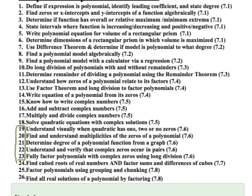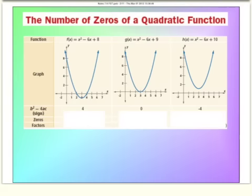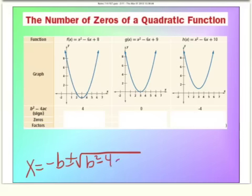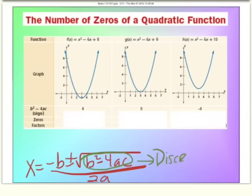Let's get into the first slide, which covers Objective 19: understand visually when a quadratic has one, two, or no zeros. One thing we know is the quadratic formula — x equals negative b, plus or minus the square root of b squared minus 4ac, all over 2a. That b squared minus 4ac is called the discriminant, and it's a short way to figure out how many times a parabola will cross the x-axis, if at all.